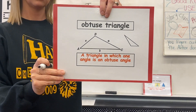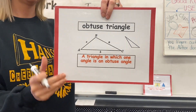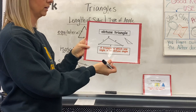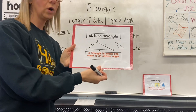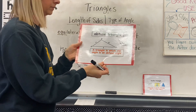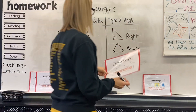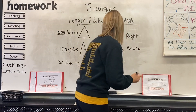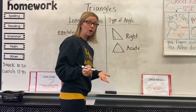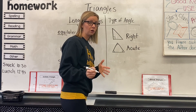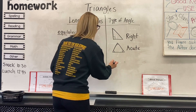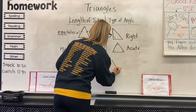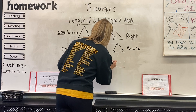And the last one is an obtuse triangle. This is a triangle in which one angle is an obtuse angle. To draw these, I like to draw an obtuse angle first and then connect.